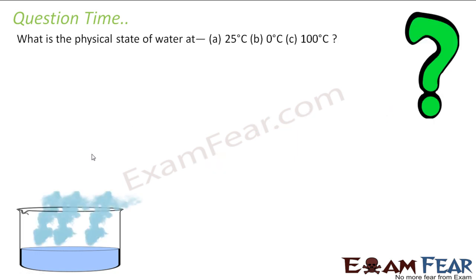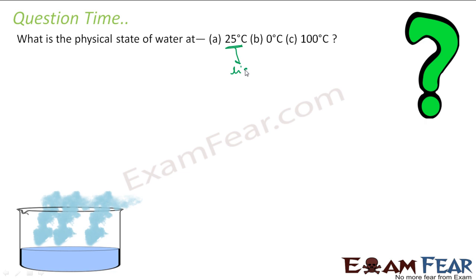The question is: what is the physical state of water at 25°C, 0°C, and 100°C? At 25°C it is normal water, almost room temperature, so it will be in the liquid state. We have seen the graph for this.